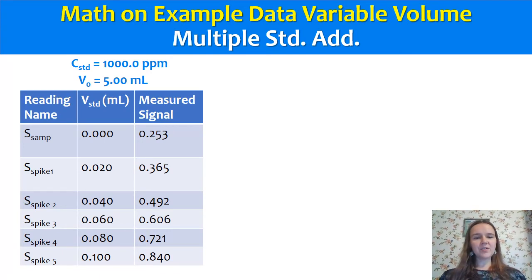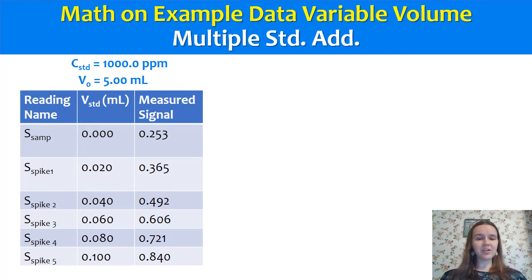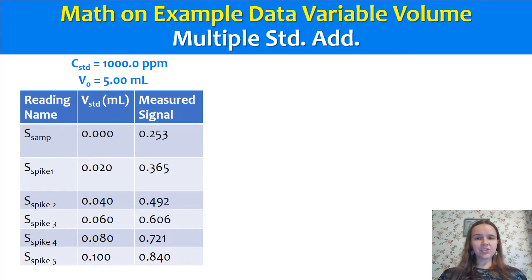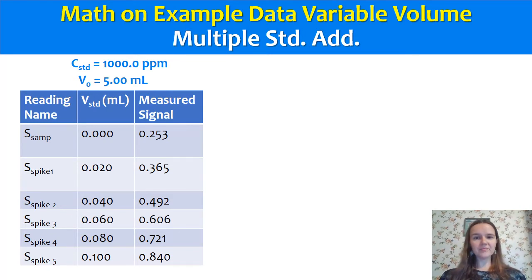Here's the example data. What you do sequentially is read the original 5 mils of sample — you get signal 0.253. Add your first aliquot of 0.02 mils of the concentrated 1,000 ppm standard, read the signal (0.365), add another 0.02 mils (total 0.04), read it, and so on until you've added all five intervals. With multiple standard additions, the math to get your original concentration will be different based on each type. I'm going to walk you through the math for this variable volume standard addition. You're going to create two different mathematical items: one for the x-axis and one for the y-axis.